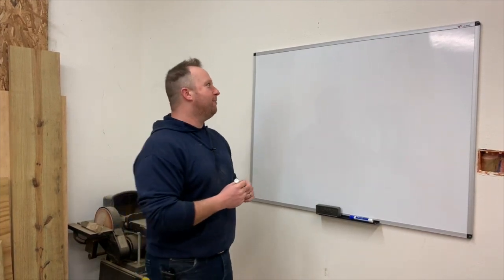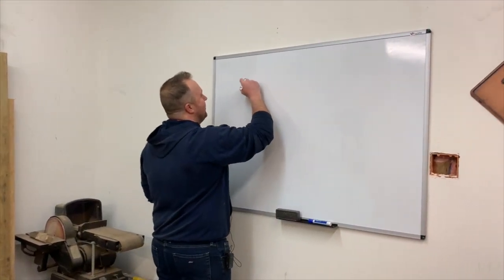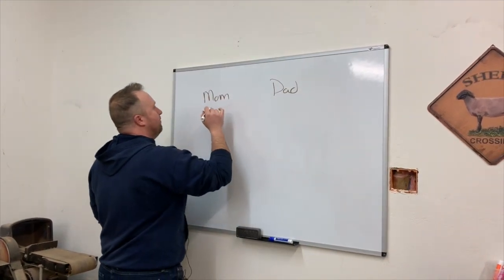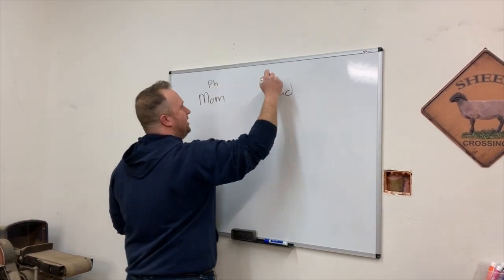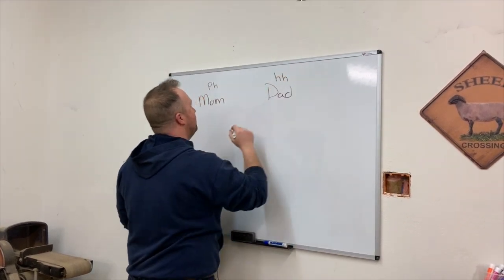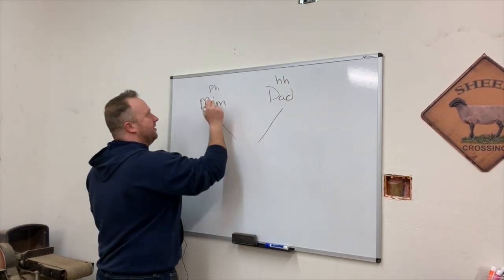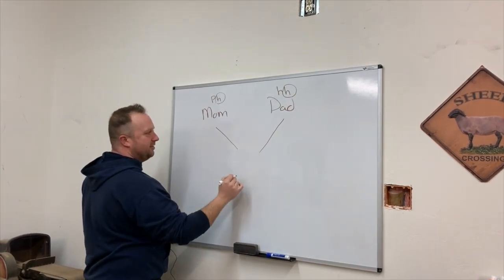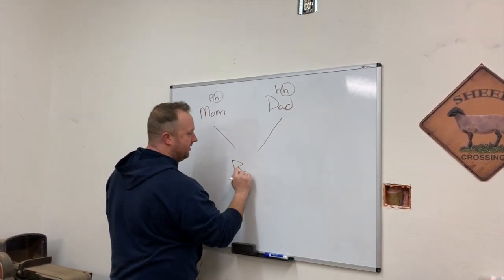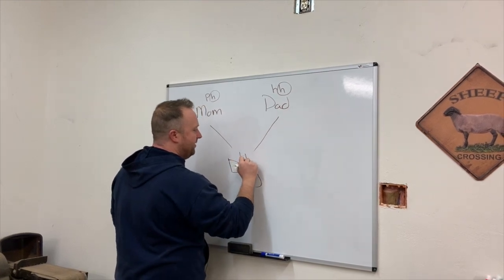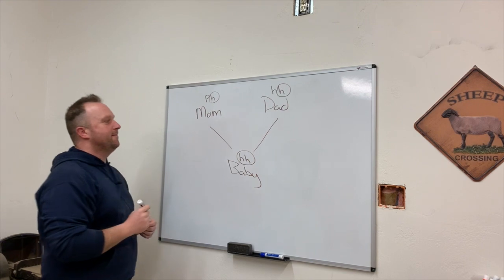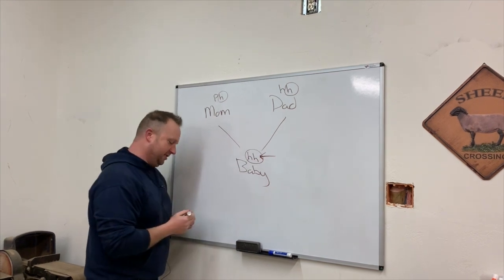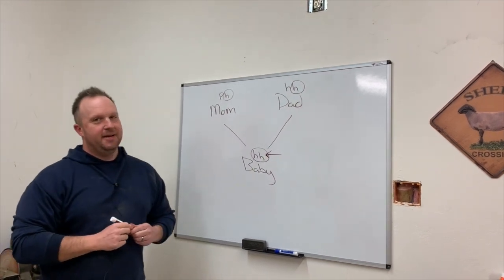So when we have our mom sheep and our dad sheep, mom and dad both have a specific gene type. They give one of these genes — we call them an allele — they give one of these to their baby, and baby develops its own gene type. So what we're going to talk about is these genes right here: what they mean and how they work.